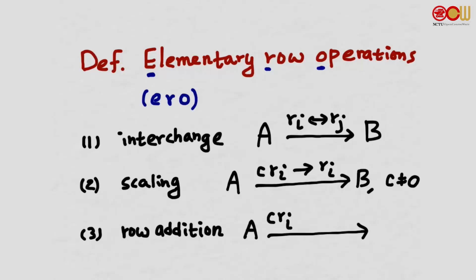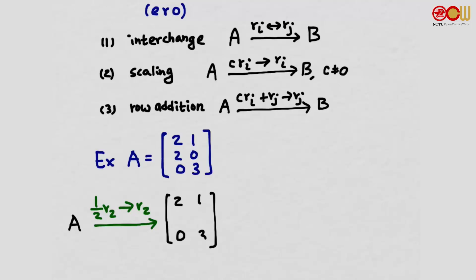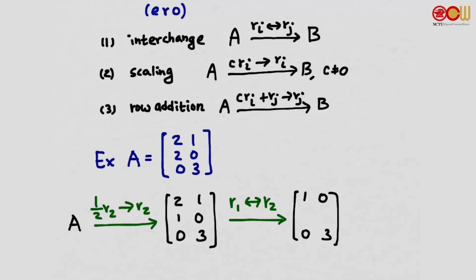For example, here is our matrix A. Suppose we apply the ERO of scaling the second row of A by one half. Only the second row is scaled, so the first and third rows remain the same. The second row is scaled by half, so the two elements become one and zero. Now suppose we apply row interchange on this matrix, interchanging R1 and R2. The third row remains the same; the second row goes to the first position and the first row comes down to the second.